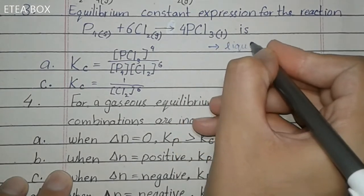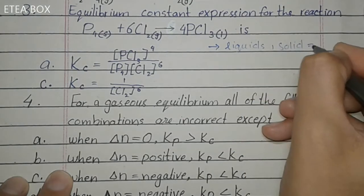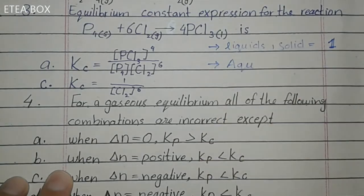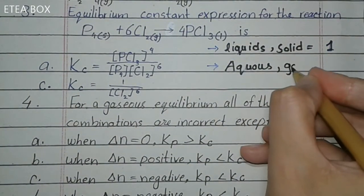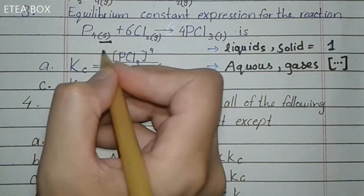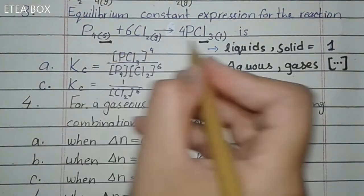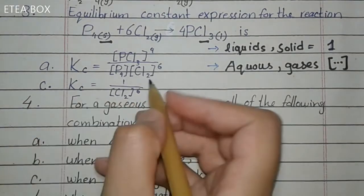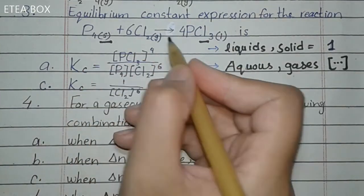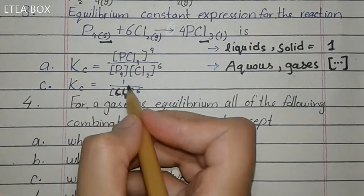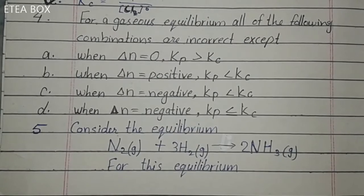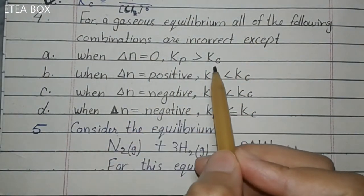Equilibrium constant expression for the reaction: keep in mind that in the case of pure liquids and solids, we write the concentration as one. While in the case of aqueous solutions or gases, we write its specific value. Here P₄ is in solid form and PCl₃ is in pure liquid form, so we write their concentration equal to one. Only Cl₂ is written in the concentration expression. So Kc equals [Cl₂] raised to its coefficient. Option C is correct.